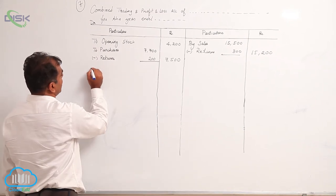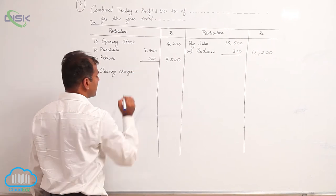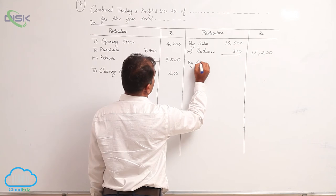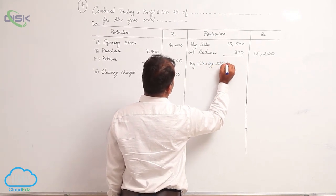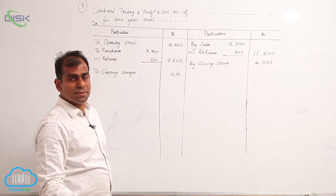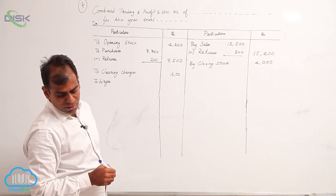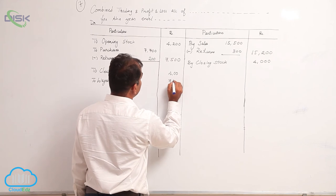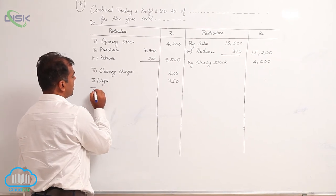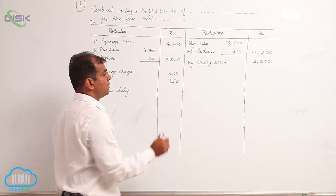Clearing charges is a direct expense, so it goes on the debit side of the trading account — amount 400. Closing stock appears on the credit side of the trading account — amount 4000. Wages go on the debit side — amount 750. Customs duty also goes on the debit side of the trading account — amount 600.